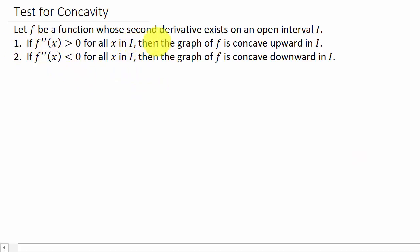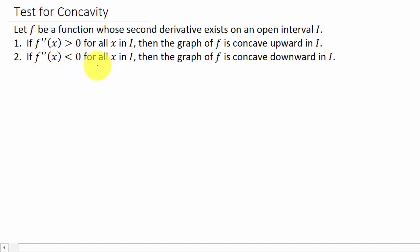F is a function whose second derivative exists on an open interval I. If F double prime is greater than zero for all x in the interval I, then the graph of F is concave upward on that interval. And if F double prime is less than zero for all x in the interval I, then the graph of F is concave downward on that interval.